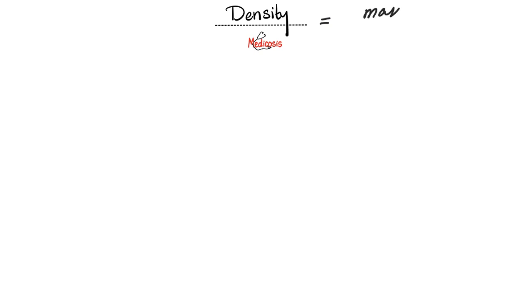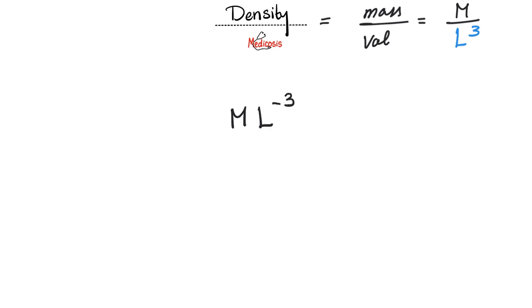Density — please pause the video and try to answer this yourself. Density is mass over volume. The dimensional formula for mass is M, and volume is length times width times height, so it is L cubed. This gives us the final result of M times L to the power negative 3.